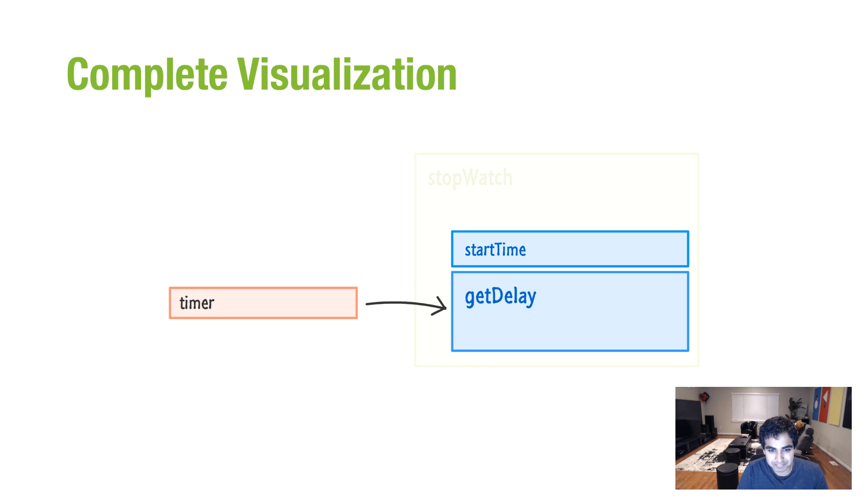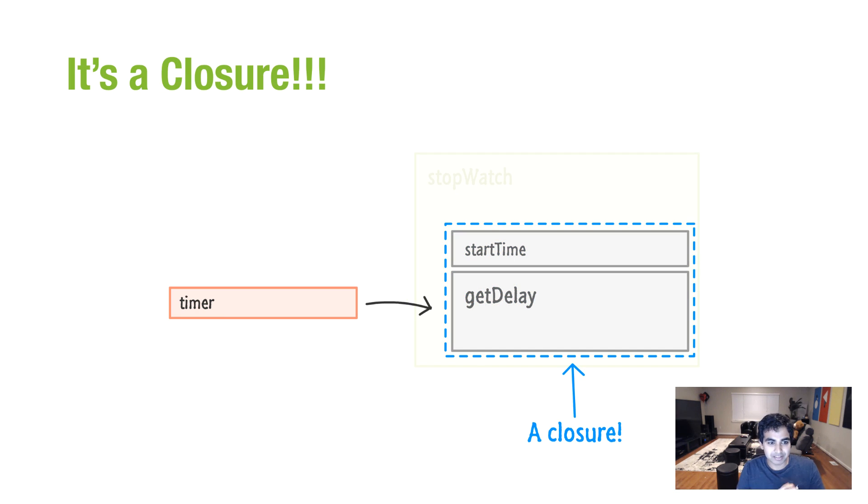So, here's what another visualization of that looks like. So, the complete visualization is this. Our timer value does, in fact, point to getDelay, like we looked at earlier. But the thing is, getDelay isn't just hanging there all by itself. Because it is dependent on the value of startTime, which is the variable declared by the stopwatch function, even that variable is considered in play when the timer variable is initialized as stopwatch. So, not only do you get getDelay, you also get startTime as well. And the punchline is this. This combination of the function and the variable that the function relies on, that is called a closure. That's it. Pretty simple, right?